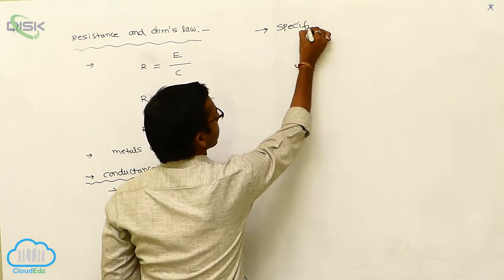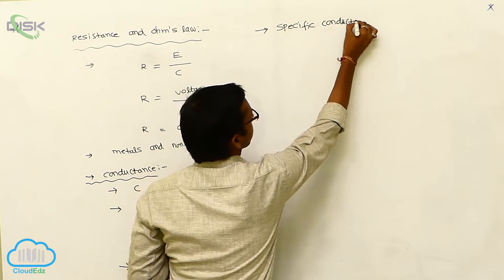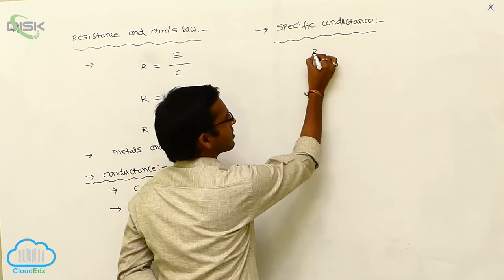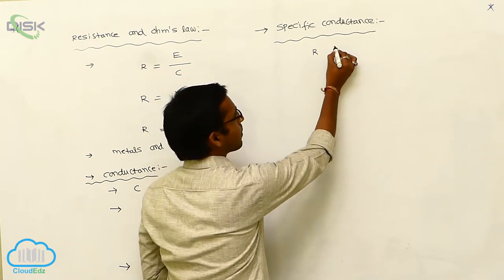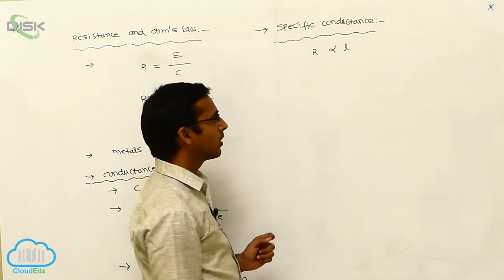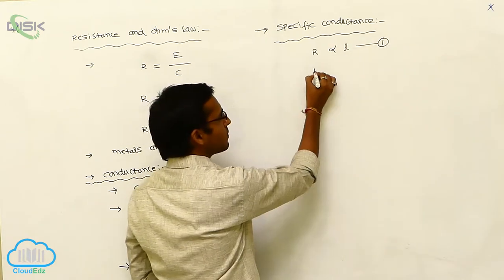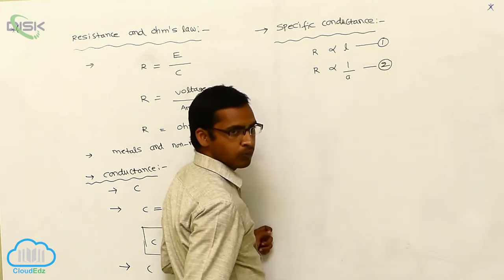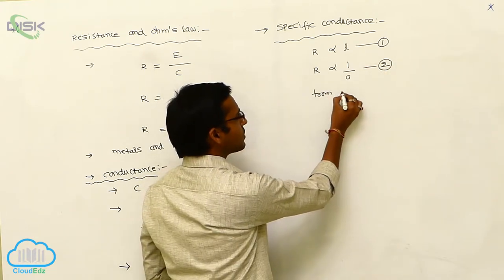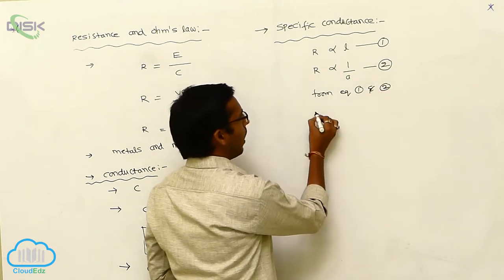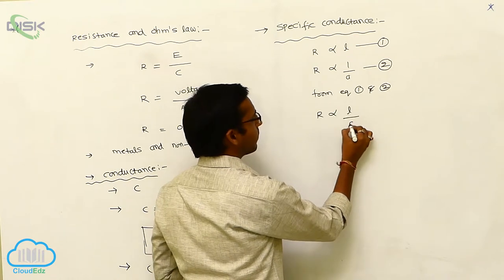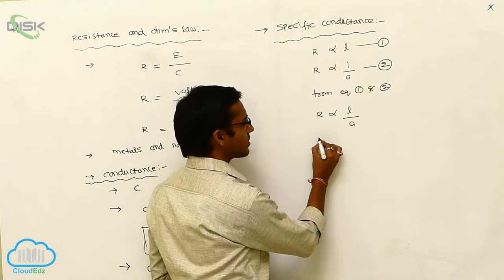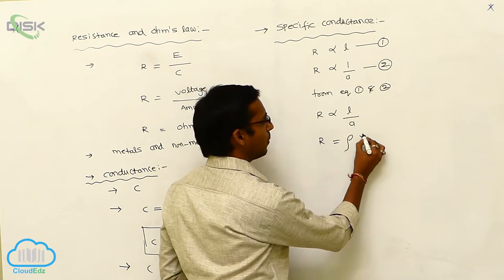Next, specific conductance. Generally resistance R is directly proportional to the length of the conductor — equation 1. And resistance is inversely proportional to area of cross section — equation 2. From equations 1 and 2, R is proportional to L by A, meaning length by area of cross section. Removing the proportionality constant, we write R equals rho into L by A.